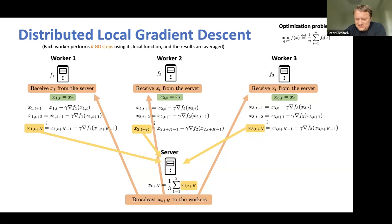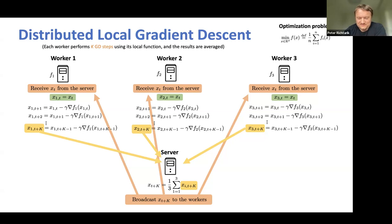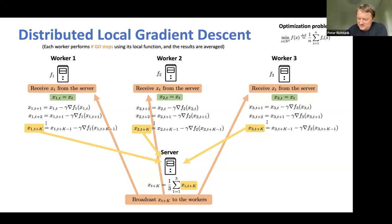So K should not be very large. But why should K have any other value than one? Imagine communication takes a day and one gradient step takes one minute. Then you have a strange algorithm doing one minute of local computation and then waiting a day to communicate. This is very imbalanced. The simple idea is to do more steps — balance the computation and communication. Since we can't reduce communication, we'll do more computation, hoping it will somehow be useful. That's really the idea of local training — local gradient descent, the simplest possible local training method.